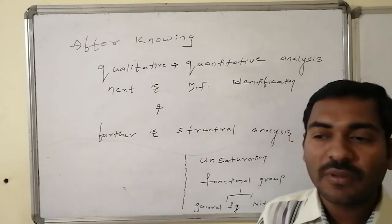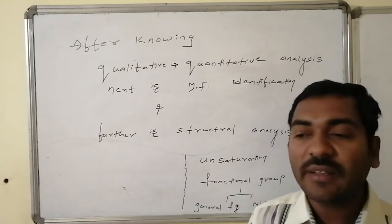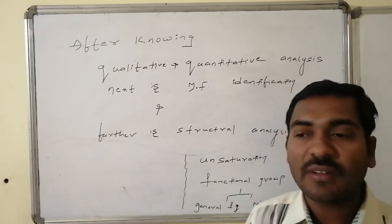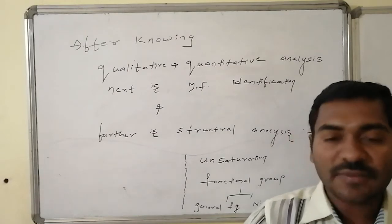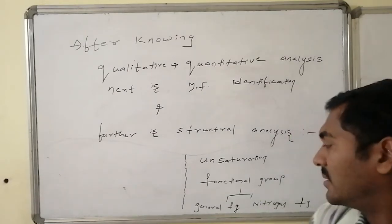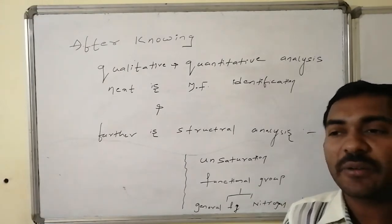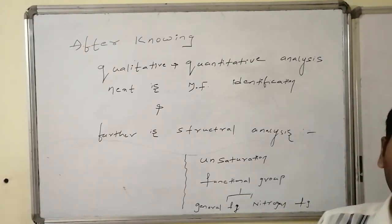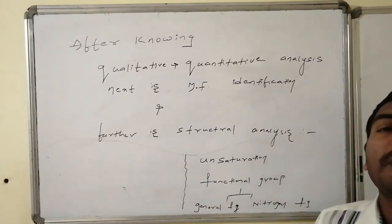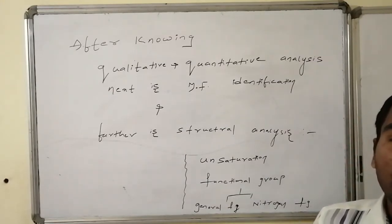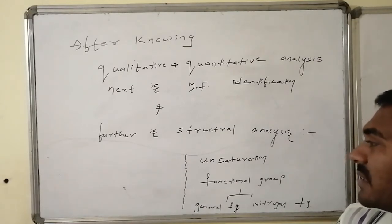Structural analysis mainly consists of information from unsaturations and saturations, followed by functional group information. Functional groups are divided into two major categories: general functional groups (not containing nitrogen) and nitrogen-containing functional groups. Combined with solubility information, we can predict the structure of organic molecules.